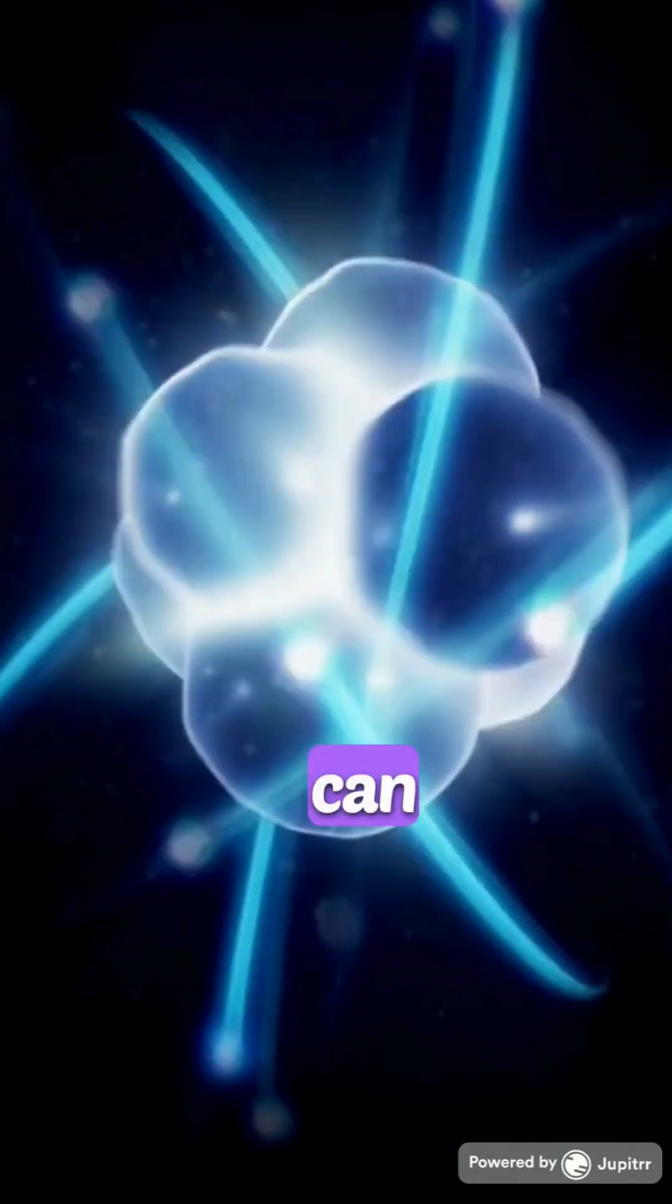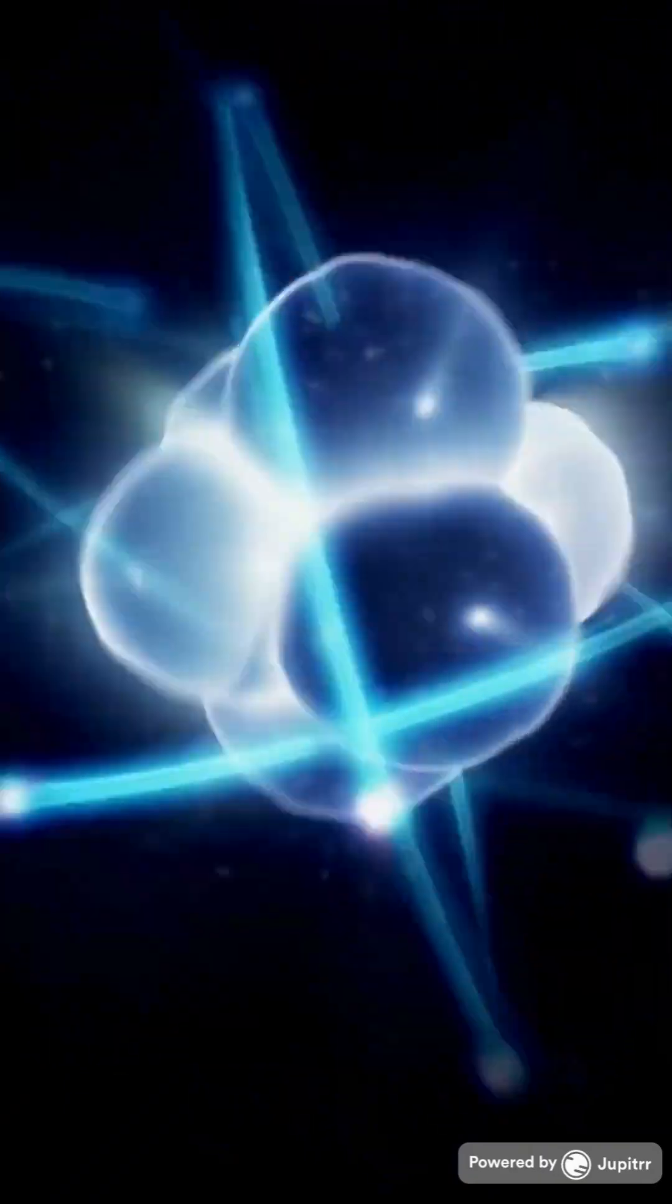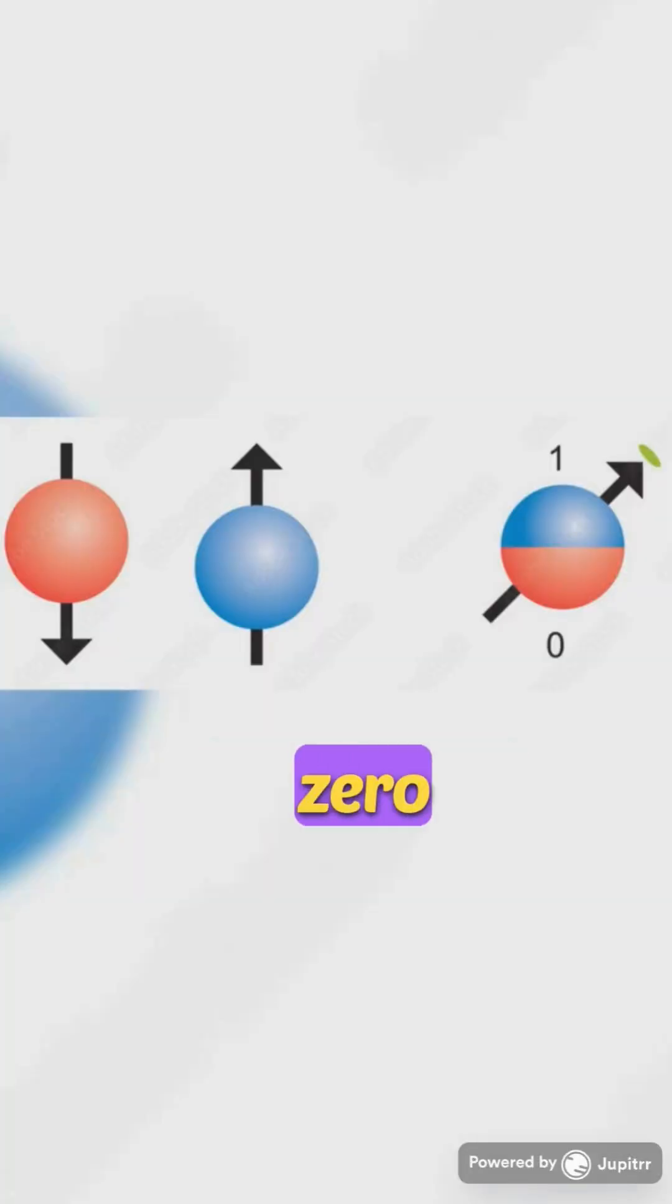In the quantum realm, particles like electrons can exist in multiple states at once. Classically, it can be in a state of zero or one, but quantum mechanically, both are possible at the same time.